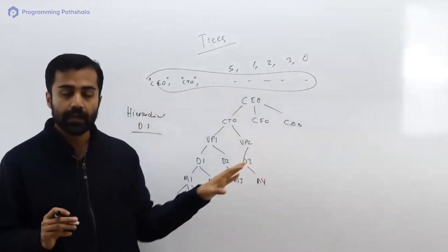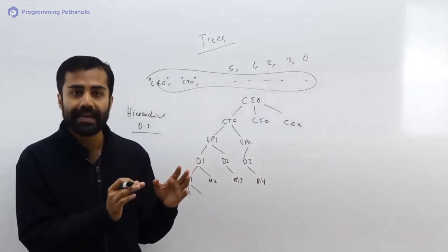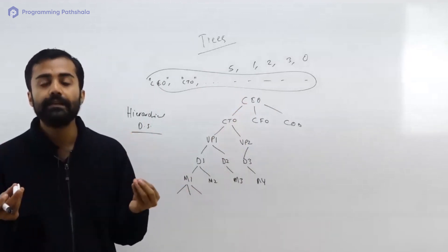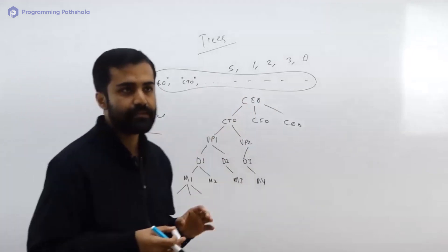So data structures exist because the problems exist. Like one problem over here is certain data can be hierarchical in nature. Whenever data is hierarchical in nature, the best way to store that is in form of a tree, because when you store that in form of a tree you preserve the parent-child relationships. Does it make sense to everyone?